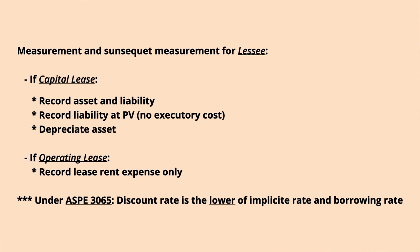The lease asset should be amortized based on the expected period, and whenever a payment is made, there is a reduction to the liability. If the lease is an operating lease, there is no asset or liability on the balance sheet — it is simply rent expense in the income statement.